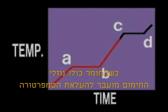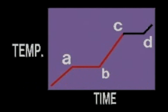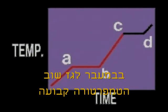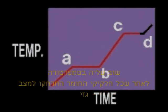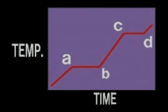At C, the liquid boils. Temperature remains constant with time until all the liquid has been converted to gas at point D. Then, temperature again increases as the gas is heated.